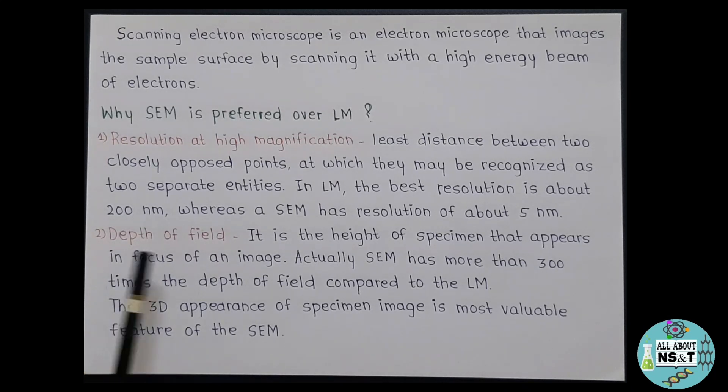Then talking about depth of field. Now what is this depth of field? It is the height of specimen that appears in focus of an image. Actually, SEM has more than 300 times the depth of field compared to the light microscope. This means that great topographical detail can be obtained using SEM. Also, the 3D appearance of specimen image is the most valuable feature of the SEM. This is because even at low magnifications, such 3D images can give much more information about a sample which is otherwise not possible with the light microscope.